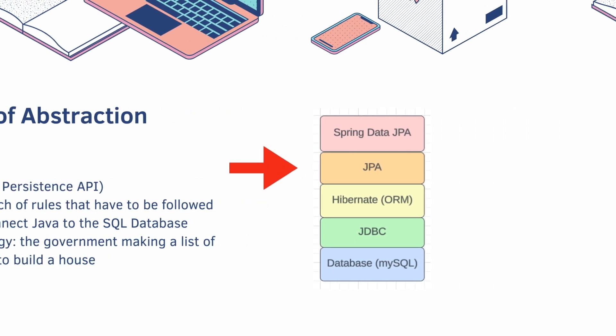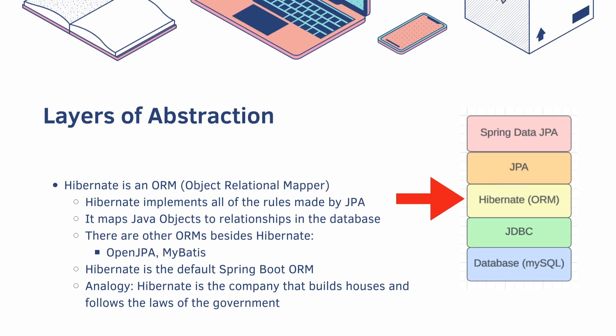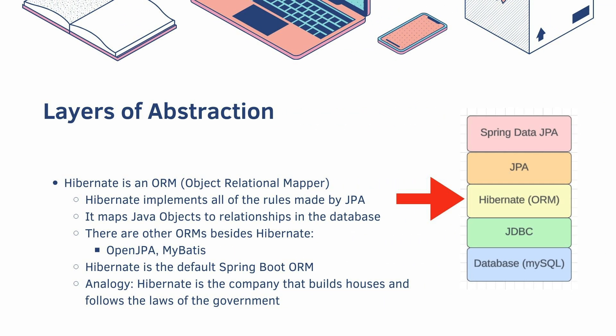Hibernate is an ORM, or Object Relational Mapper. Hibernate implements all of the rules made by JPA and maps Java objects to relationships in the database. There are other ORMs besides Hibernate, like OpenJPA or MyBatis — they work basically the same way. Hibernate is the default Spring Boot ORM, which is why we're using it. The analogy here is that Hibernate is the company that builds houses and follows the laws of the government.